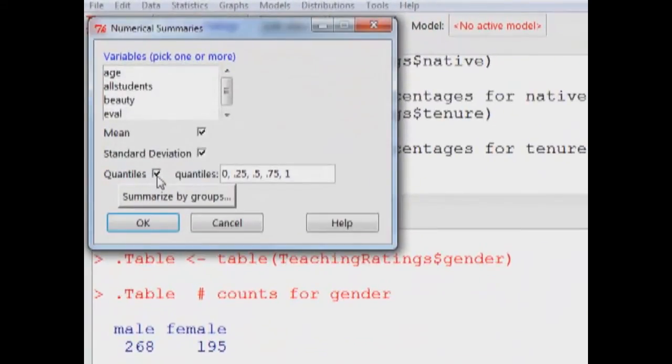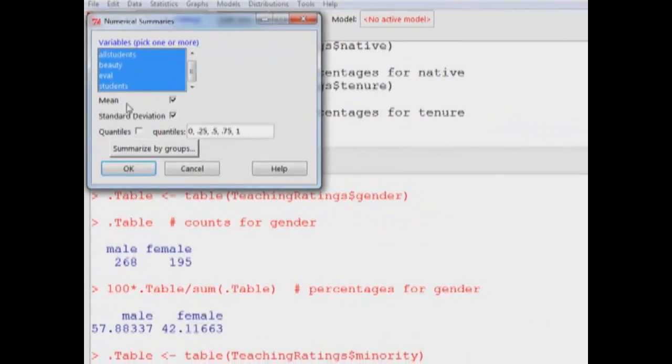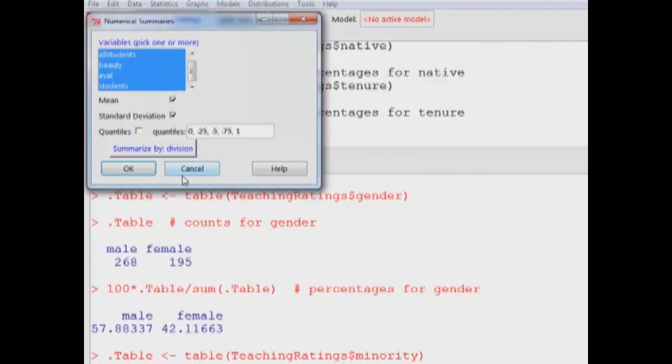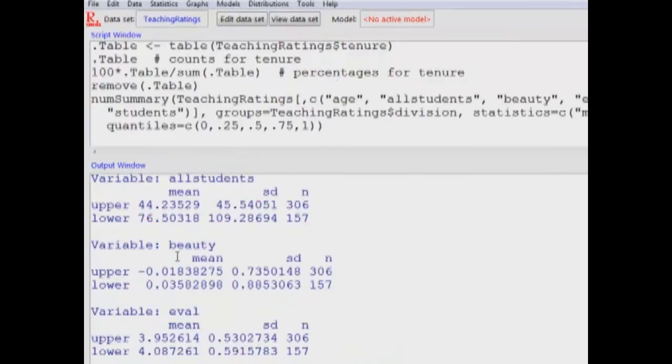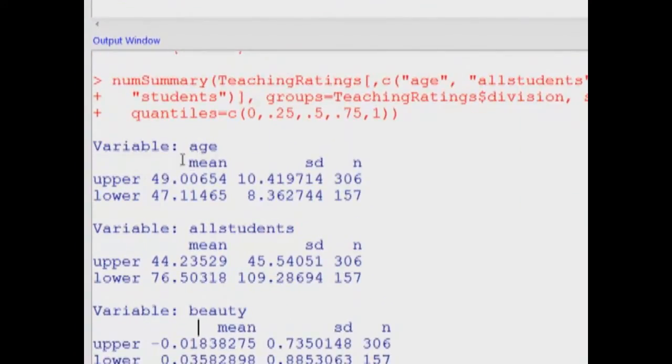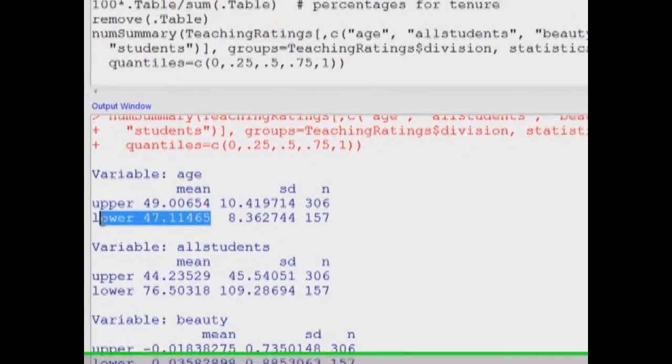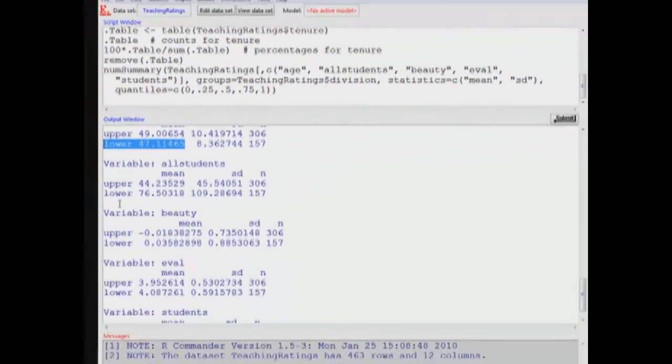Numerical Summaries, and this time around, we click all these continuous variables, but say summarize by group called division, and the results are now going to be summarized by division. So here's the output. The average age of the instructor teaching an upper-level course is 49 and a lower-level course is 47.